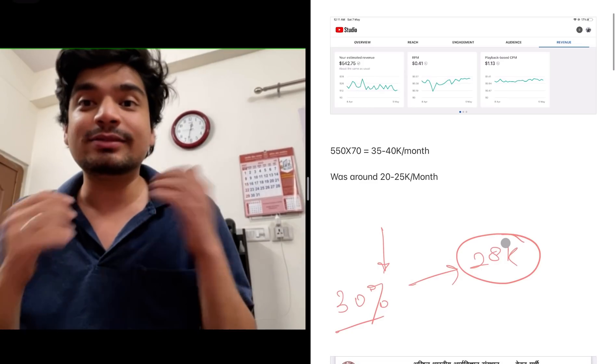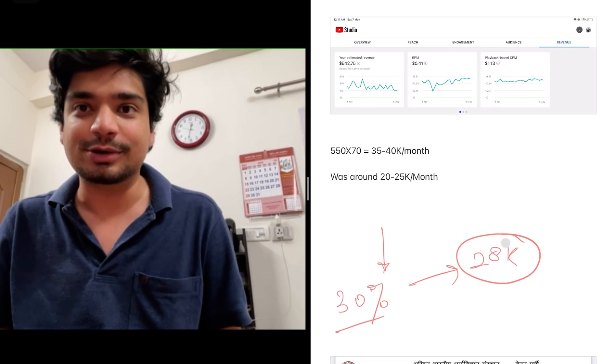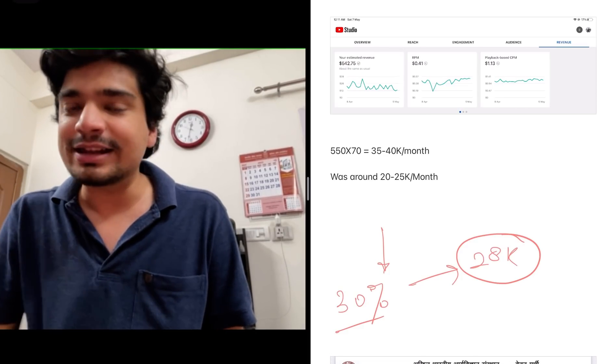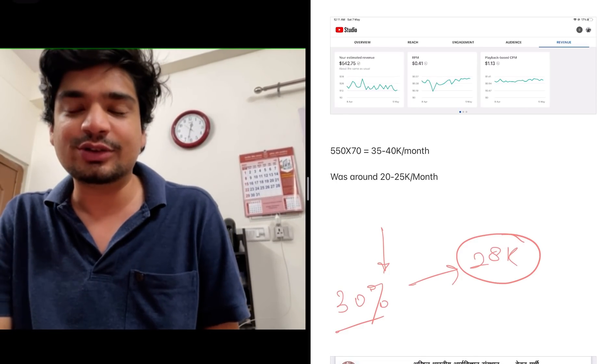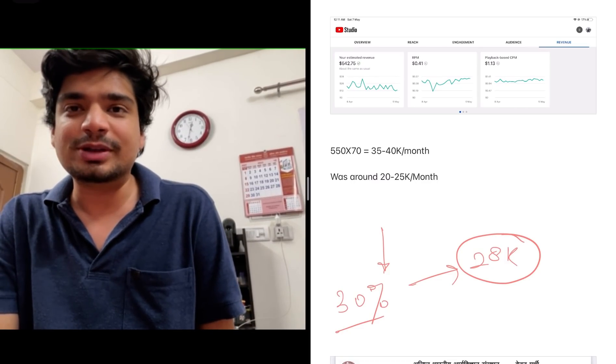And more importantly, this is when now I have 1.5 lakh subscribers. When I was in initial stages like 30,000, 40,000 subscribers or 50,000 subscribers, it was just around 20,000 rupees maximum.